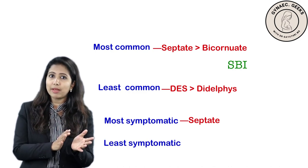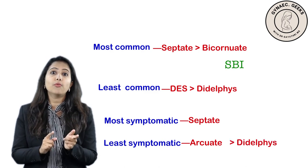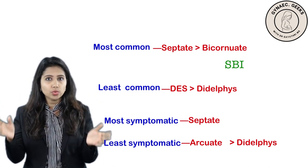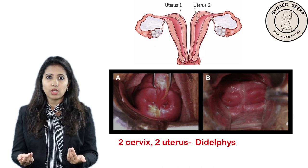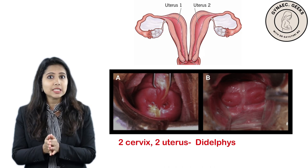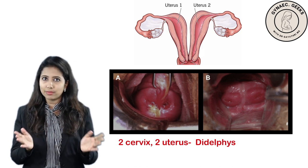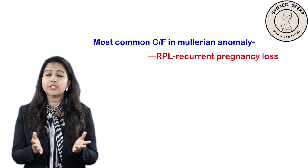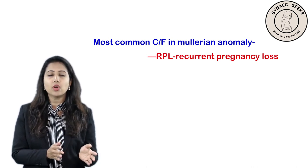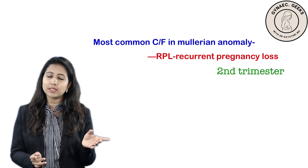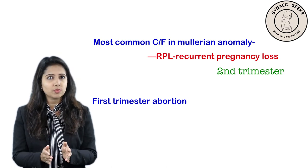The anomaly with the best pregnancy outcome — least symptomatic — is arcuate, because the defect is very small. If arcuate is not given as an option, go for uterine didelphys, since there are two separate uteri and the pregnancy can grow in them completely. These women usually have no symptoms and are diagnosed incidentally on per speculum examination — two cervices or a divided vagina. The most common clinical presentation is recurrent pregnancy loss, also known as habitual abortion, which typically occurs in the second trimester.